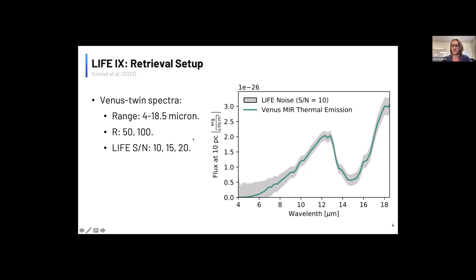And we consider also different signal-to-noise ratios from 10 all the way to 20. And then we run retrievals on this spectrum using two different models. One model is the true model, which basically assumes that there is somewhere in this atmosphere an opaque layer of sulfuric acid clouds.